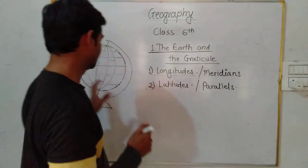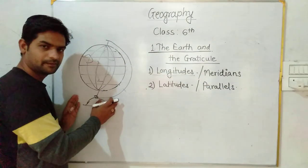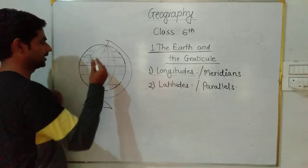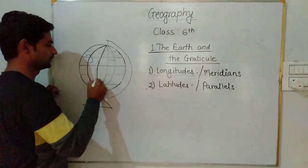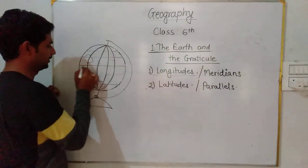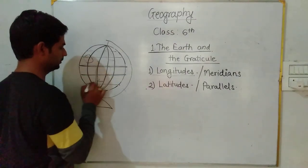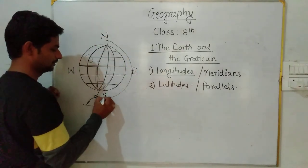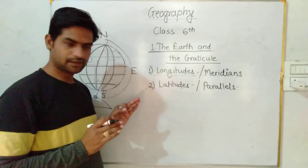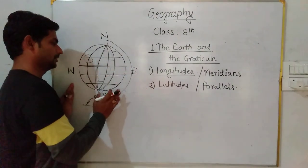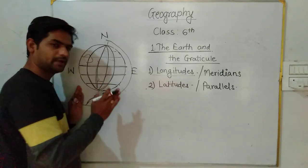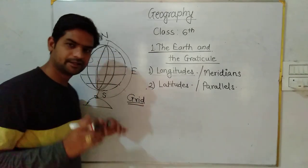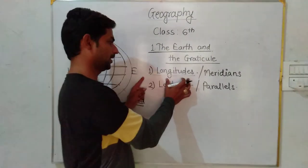Just like I draw here, this is the globe. On this globe there are some imaginary lines which are running from North to South, and some imaginary lines are running from East to West. This is East, West, North, South. This figure is also known as a grid. In this lecture, I will explain you about the longitudes and latitudes.